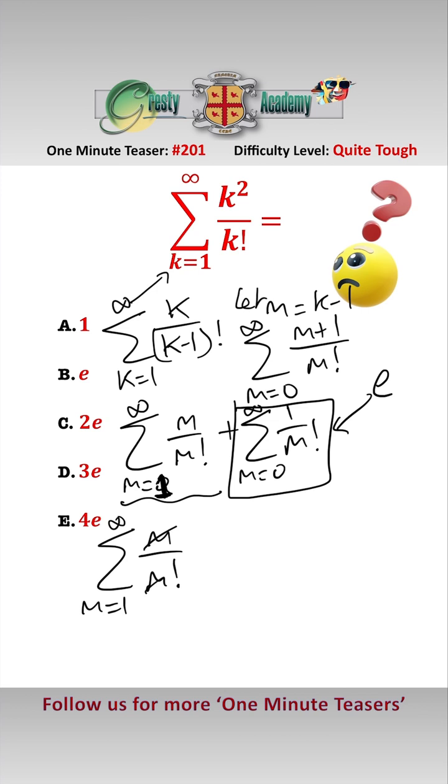we can divide top and bottom by m, which equals the sum between m equals 1 and infinity of 1 over m minus 1 factorial,